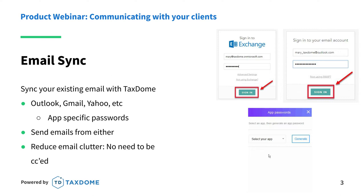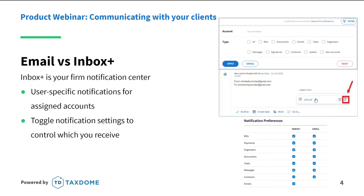Once everything is synced, you might notice your inbox is empty — that's a great question. Your Inbox Plus is your personalized notification center, and emails are just one of the notifications you can choose to see there. Each user can set up their Inbox Plus to populate with whatever is important to them. On the right side of the screen, you can see options to toggle on and off for bills, payments, documents, tasks, and even emails. You can also choose to get notifications in Inbox Plus, your email, or just one or the other.